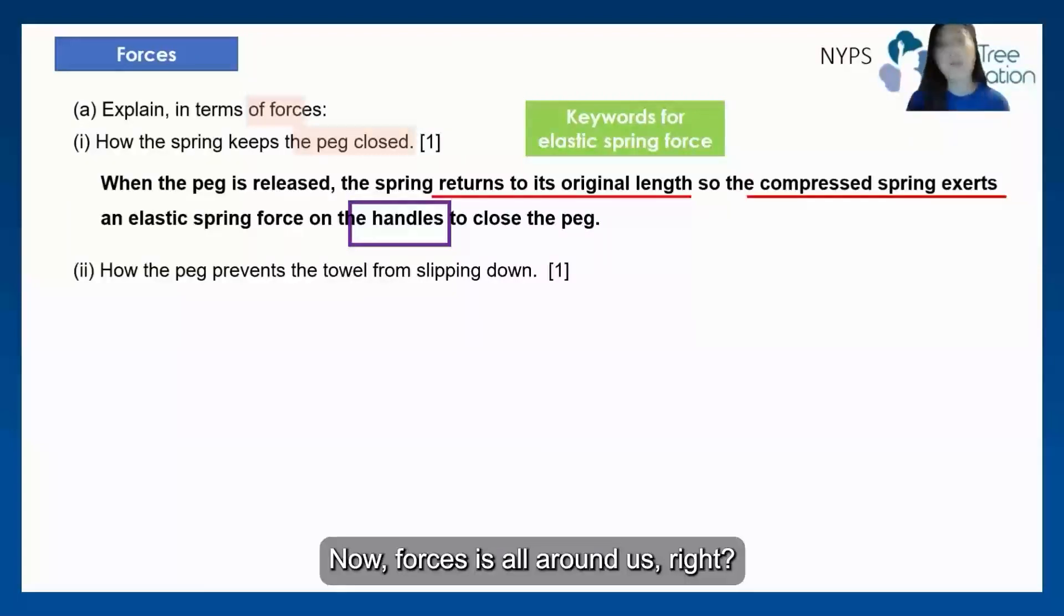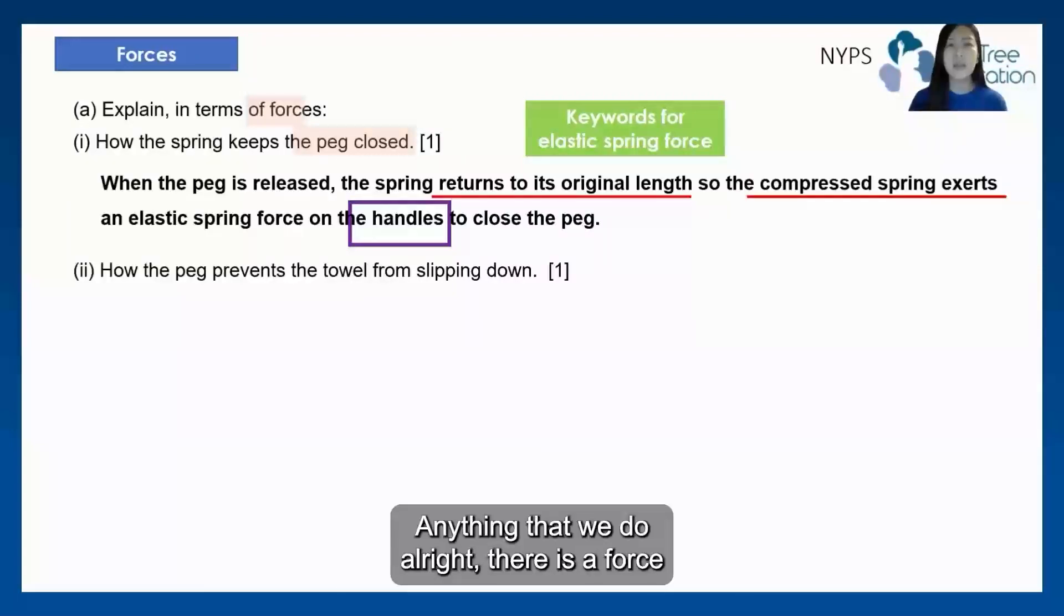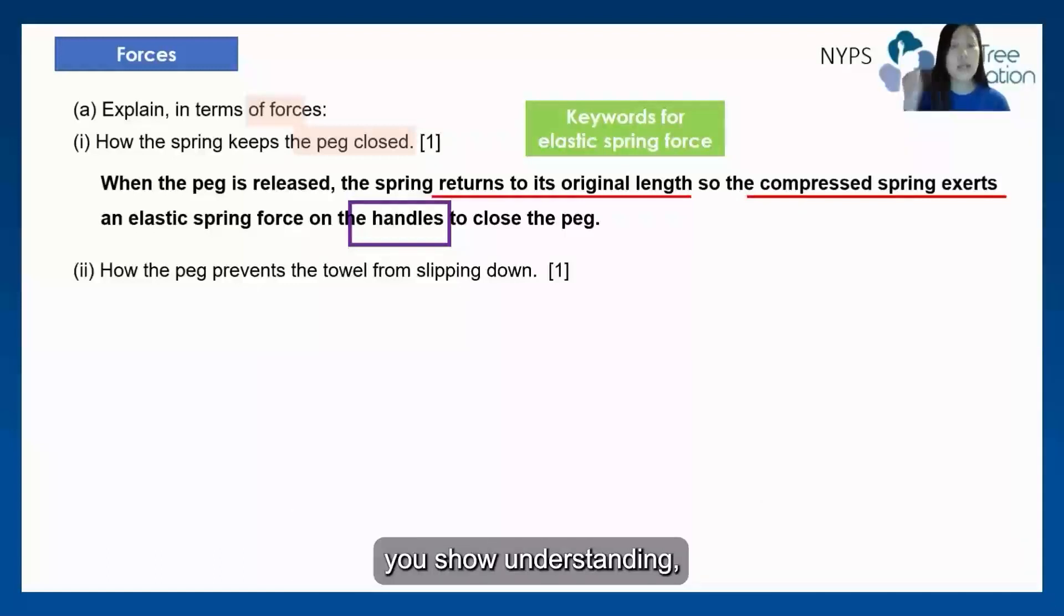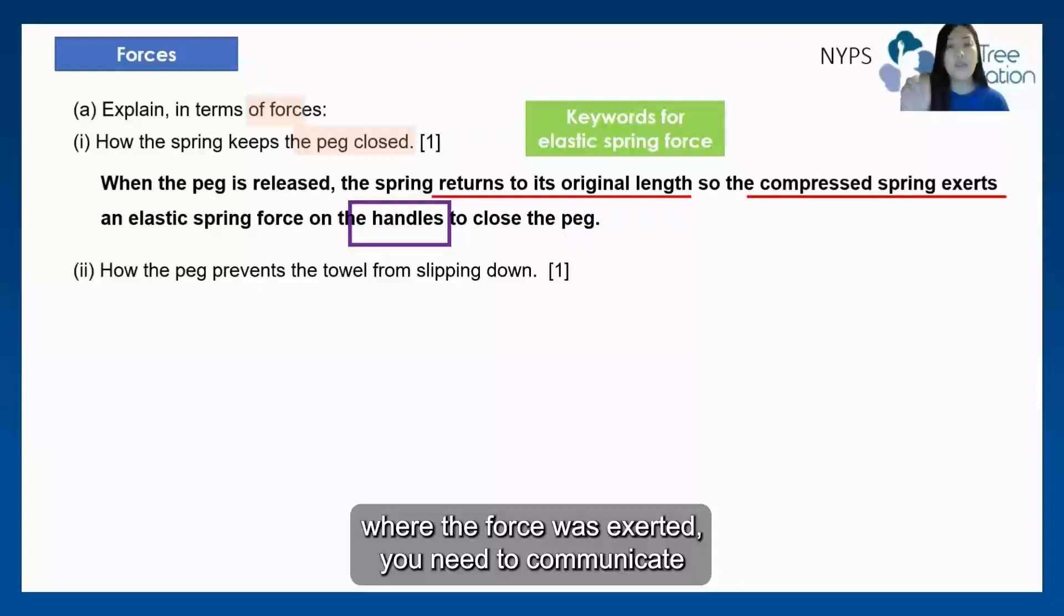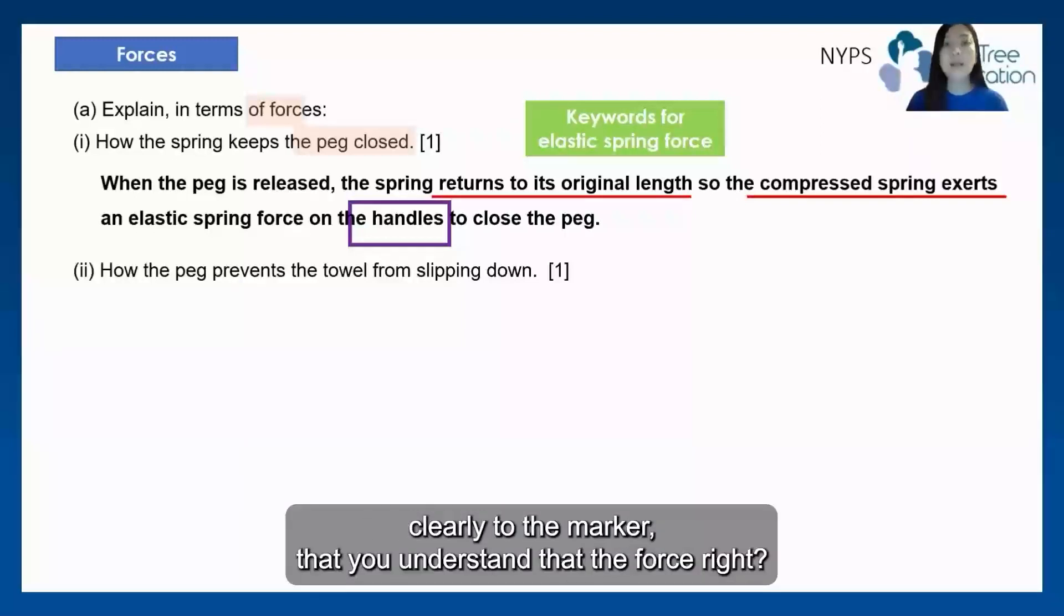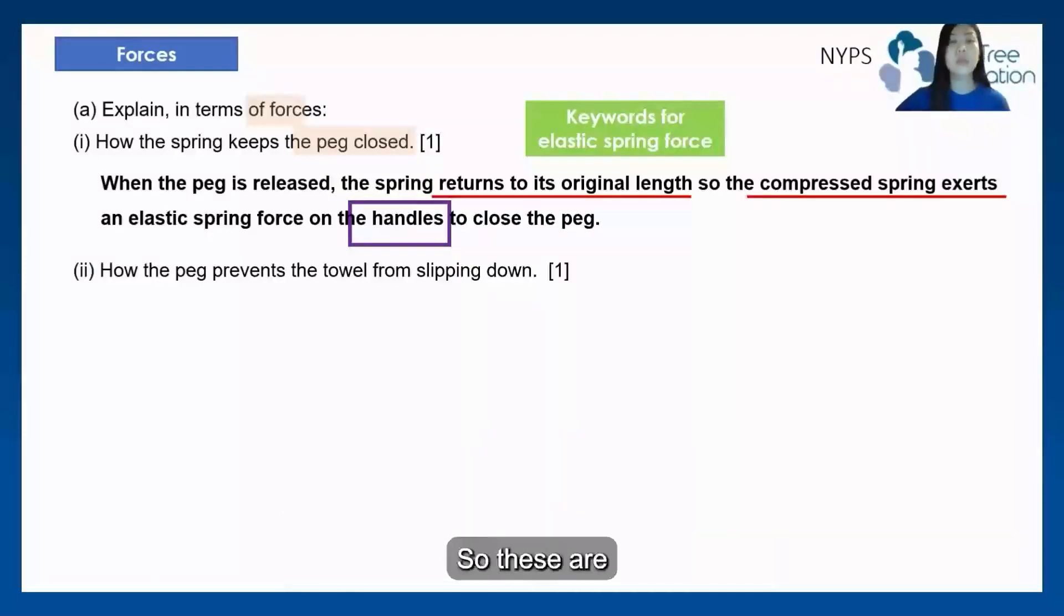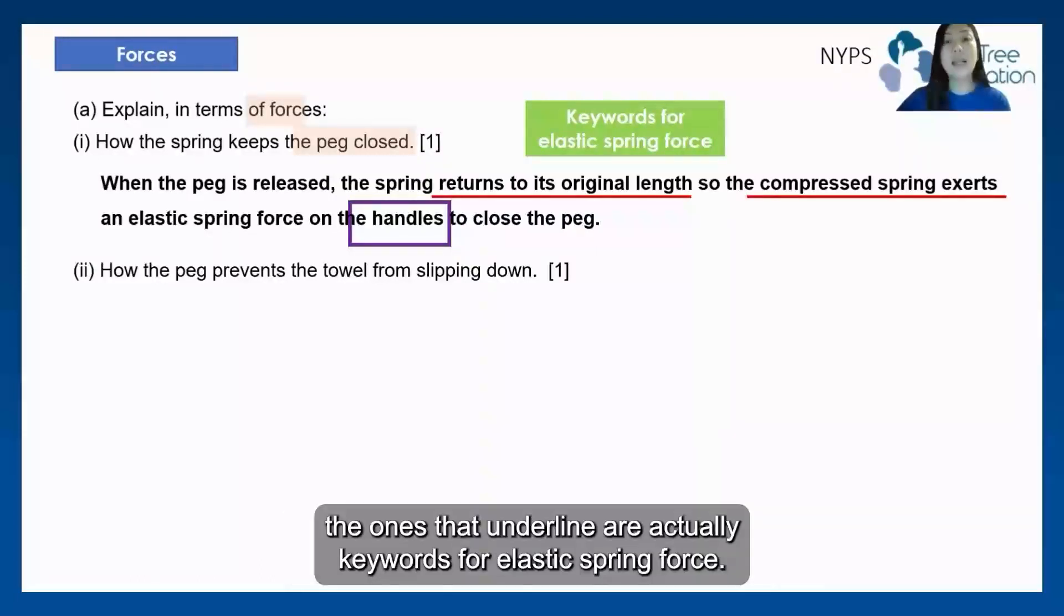Now, forces is all around us. Anything that we do, there is a force, there's always push or a pull. So it is very important in your question that you understand, you show understanding, where the force was exerted. You need to communicate clearly to the marker that you understand that the force was actually exerted on the handle and therefore the peg was able to close. So these are the ones that are underlined are actually keywords for elastic spring force.